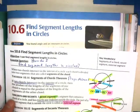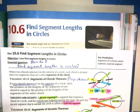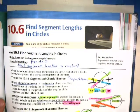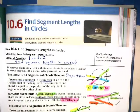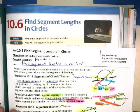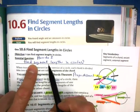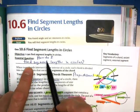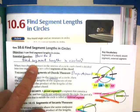Here we are at 10.6 Find Segment Lengths in Circles. I think I'm ready to lead you through this section in an efficient and simple way for you. Have you written down the essential question? How do I find segment lengths in circles?